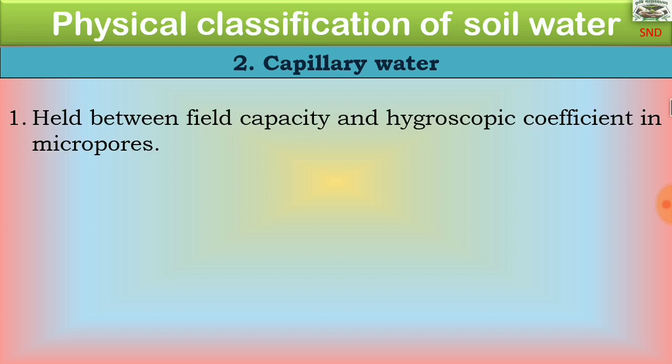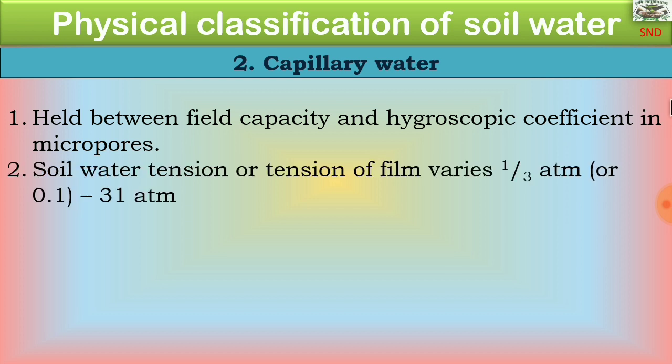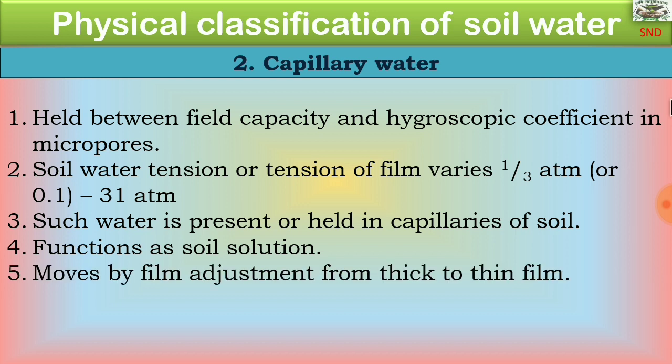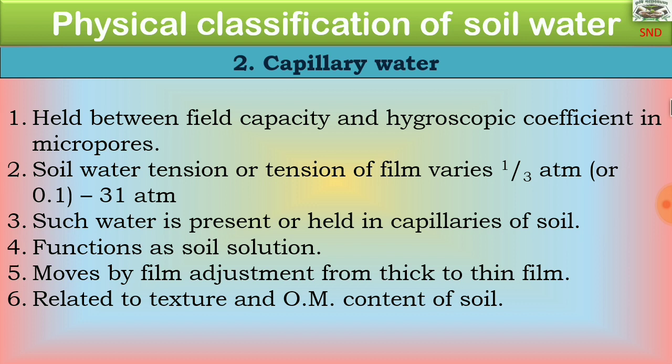The next is capillary water, held between field capacity and the hygroscopic coefficient in micropores. Soil water tension varies from one-third atmosphere, or 0.1 to 31 atmospheres. Such water is held in capillaries of the soil, functions as soil solution, and moves by film adjustment from thick to thin film. It is related to the texture and organic matter content of the soil.